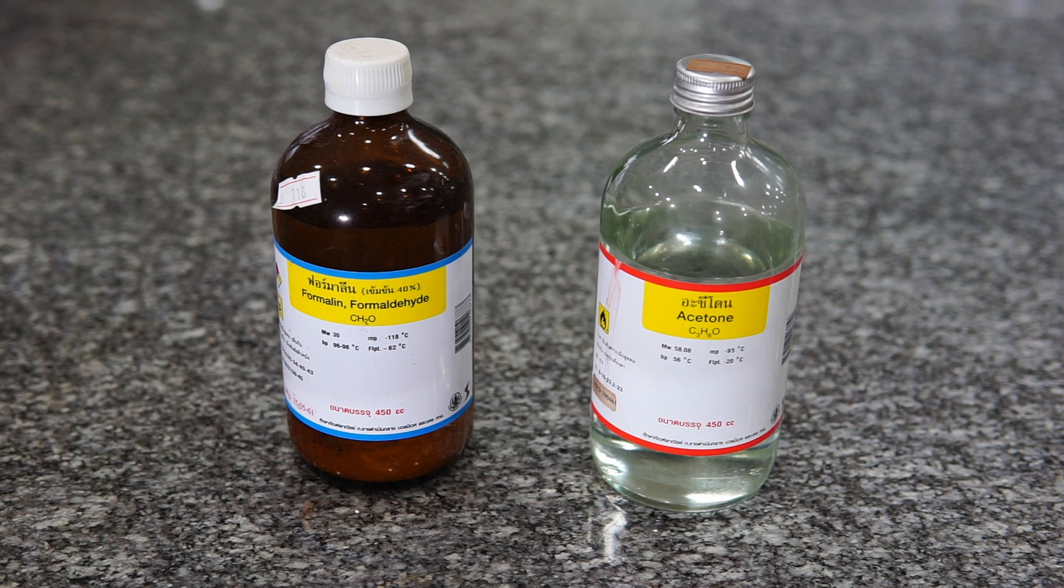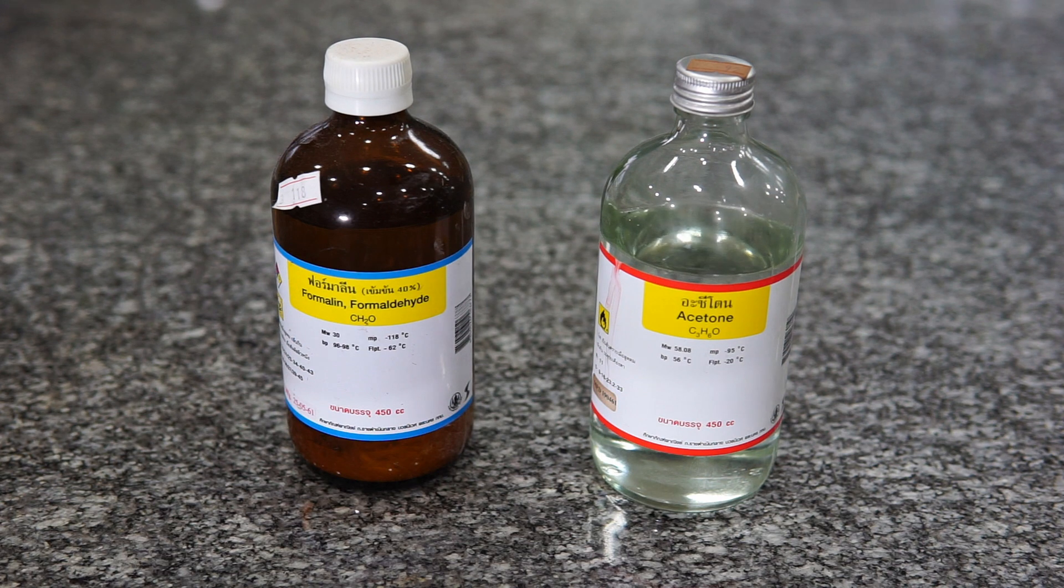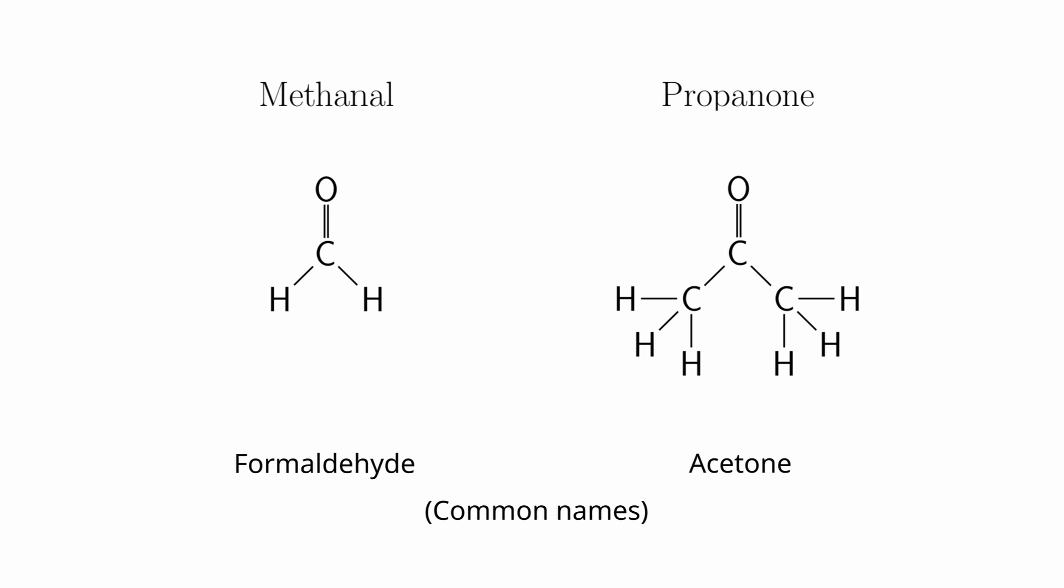Here are the chemical structures. You should remember that methanol is a kind of aldehyde. Aldehydes have a carbonyl, that is the C double bond to the oxygen, at the end of the chain, whereas ketones such as propanone have the carbonyl group somewhere in the middle of the chain.